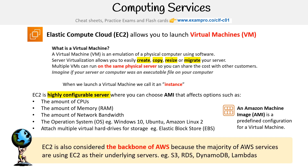EC2 is also considered the backbone of AWS because the majority of AWS services use EC2 as the underlying servers — whether it's S3, RDS, DynamoDB, or Lambda. When we talk about the AWS network, that is the backbone for global infrastructure and networking at large, and EC2 is what powers those services.